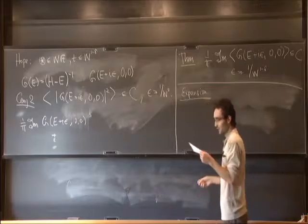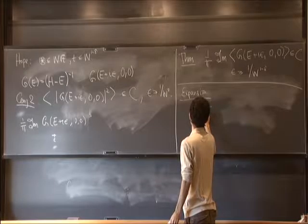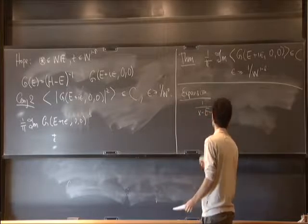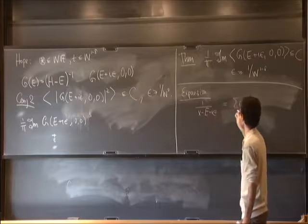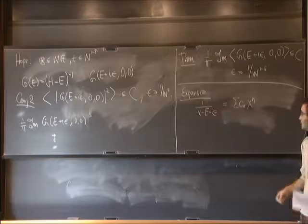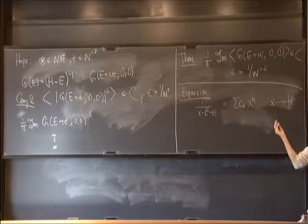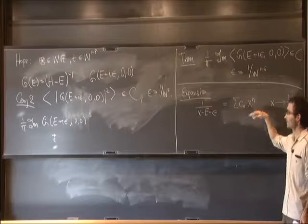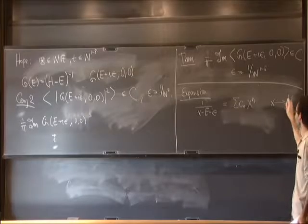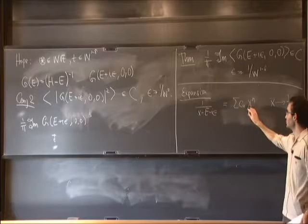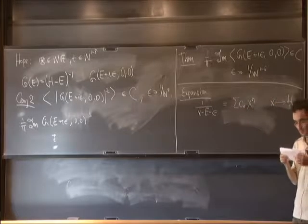How do you do a perturbation expansion? The naive way is to expand 1 over (x minus E minus i epsilon) into powers of x, then substitute the operator H. It's nice because the nth power of the operator has each element depending on only a finite number of entries of H. So you can in principle compute each term and hope the series converges.